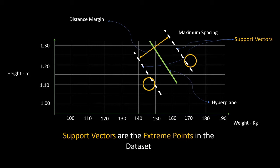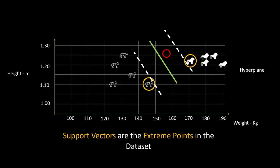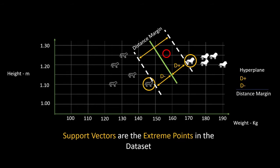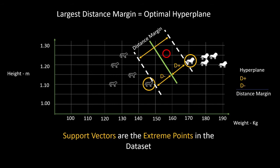Support vectors are the extreme points in the dataset. There are two equal-distant lines from the hyperplane. When plotting our data, we look at two extreme points between the different classifications — female lion versus male lion. For a new data point, we look at D-plus-one and D-minus-one, and the sum of that equals our distance margin. The largest distance margin equals the optimal hyperplane. That's really what it boils down to.